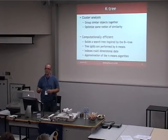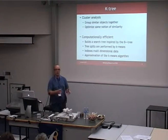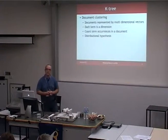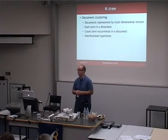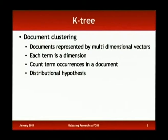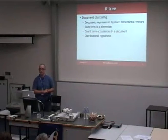The K-Tree actually approximates the K-means algorithm by making lots of little local decisions. Where this is mainly being applied is to document clustering — the idea being to automatically find topics in documents. Each document is represented as a multidimensional vector: you count the words in the documents and each term becomes a dimension. This is supported by the distributional hypothesis, which says contexts that use words in a similar manner have the same meaning. So if documents are close to each other in that space, they're probably talking about the same thing.